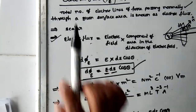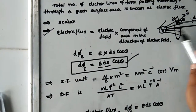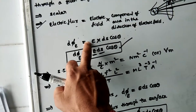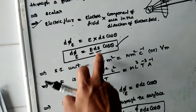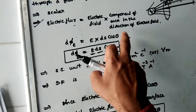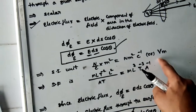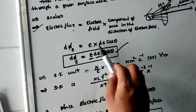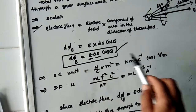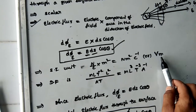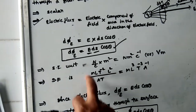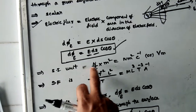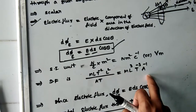Electric flux is a scalar quantity — it is just a number. The SI unit: electric field is newton per coulomb, area is meter squared, cos theta has no units, so the unit is Newton meter squared per coulomb. Alternatively, since electric field can be expressed in volt per meter and area in meter squared, another unit is volt meter. The dimensional formula for electric field is M L T⁻³ A⁻¹, and with area L², the dimensional formula for electric flux is M L³ T⁻³ A⁻¹.